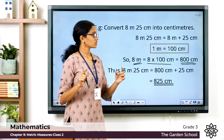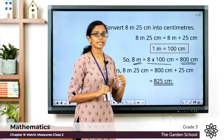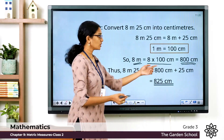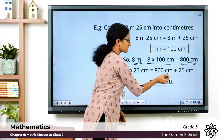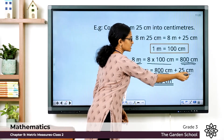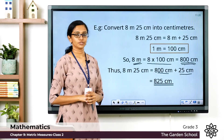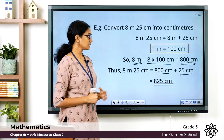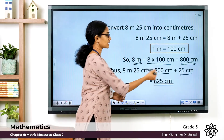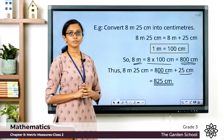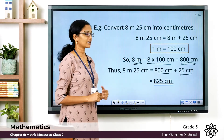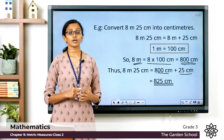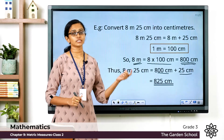So 8 m 25 cm = 8 meters + 25 centimeters = 800 + 25 = 825 centimeters. The answer is 825 centimeters. So 8 meters 25 centimeters is equal to 825 centimeters. Now we have learned how to convert meters into centimeters.